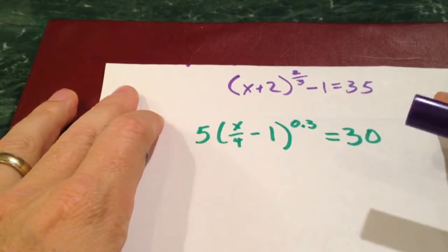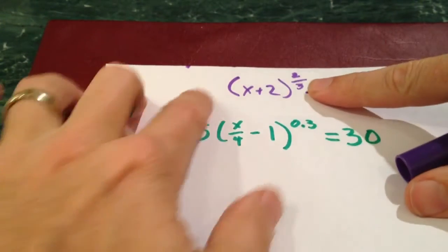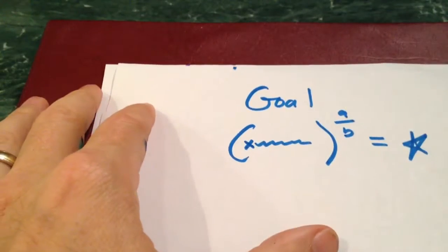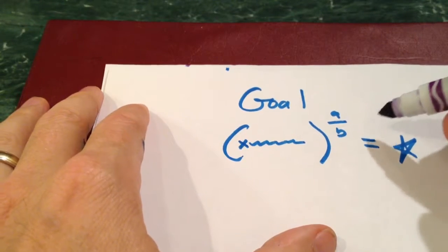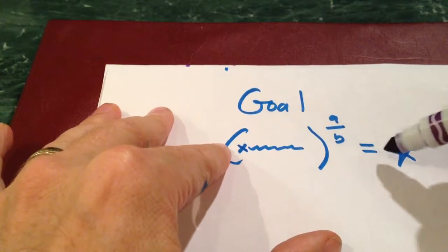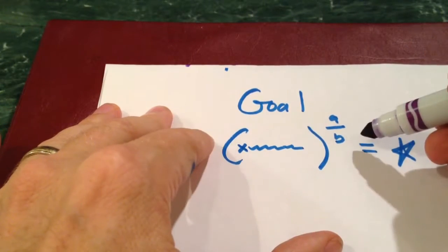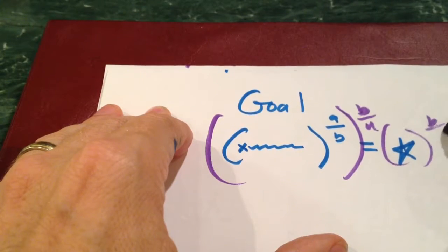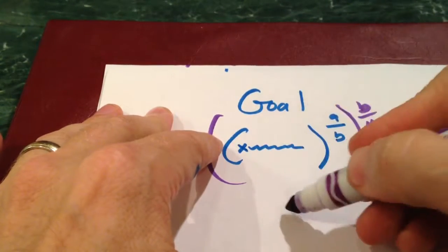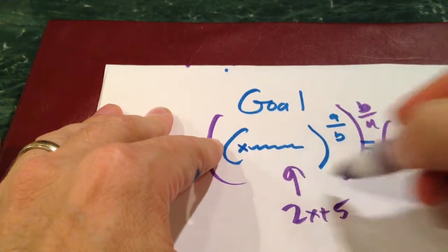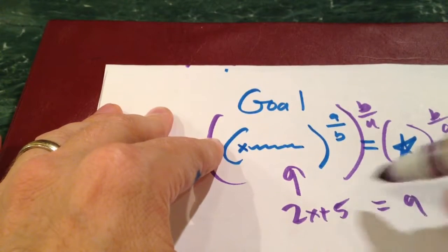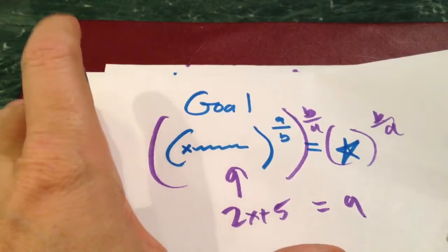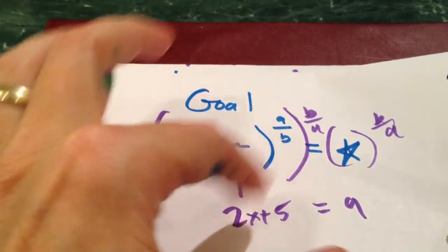This is almost like our previous problem, except I don't have just x to the 2 thirds equals something. I've got some other stuff in there. Our goal in these problems, our intermediary goal, is to get something raised to the a over b power equals something. Once we get to this, we can do our trick where we multiply both sides by b over a.